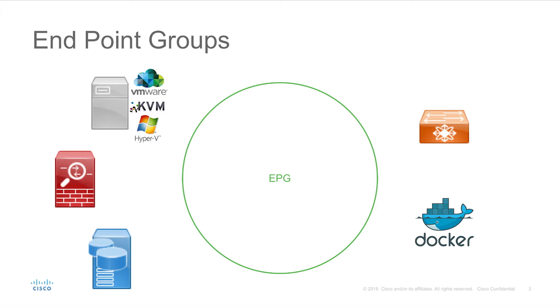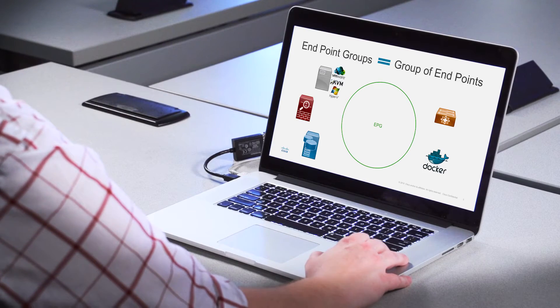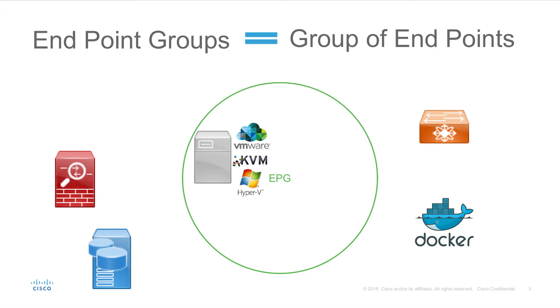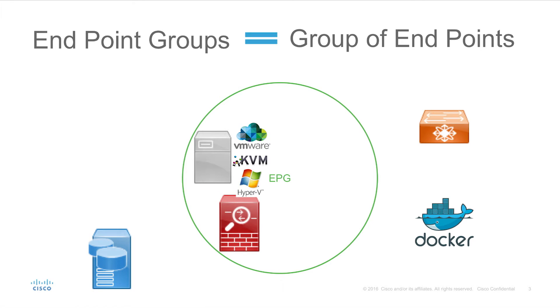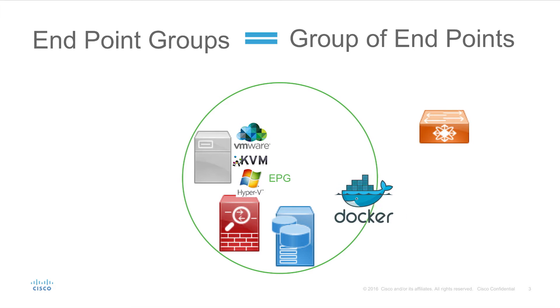The definition of an endpoint group is that it's literally a group of endpoints — that's all it is. Anything you might attach to the leaf switches in ACI would be considered an endpoint. It could be bare metal servers with hypervisors on them or without hypervisors. They could be layer four through seven services like firewalls, a storage array, docker containers, or any sort of microservices really.